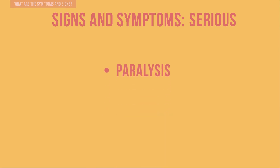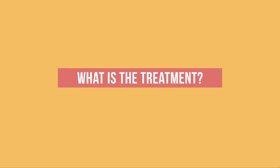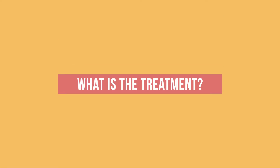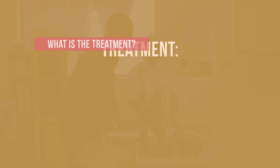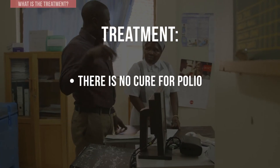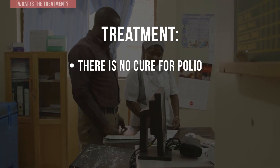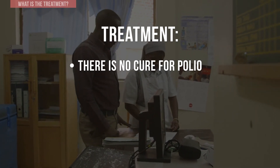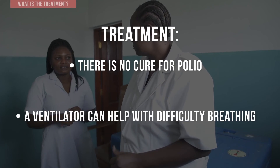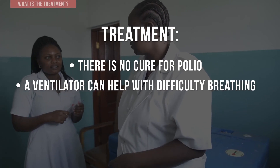paralysis occurs, and among those cases of paralysis, death occurs five to ten percent of the time. What is the treatment? There is no cure for polio. Treatments focus on supporting care for symptoms. For example, a ventilator can